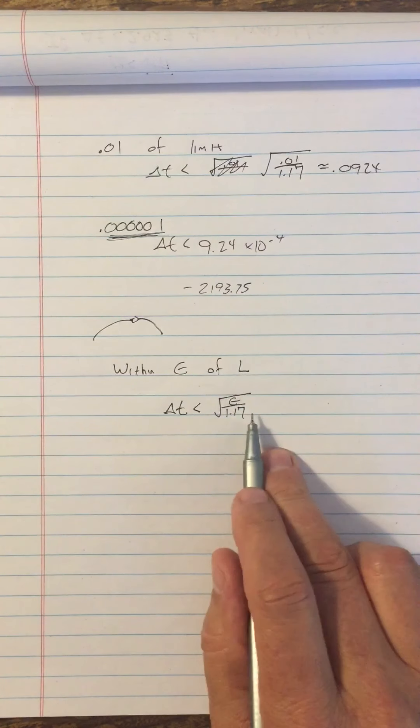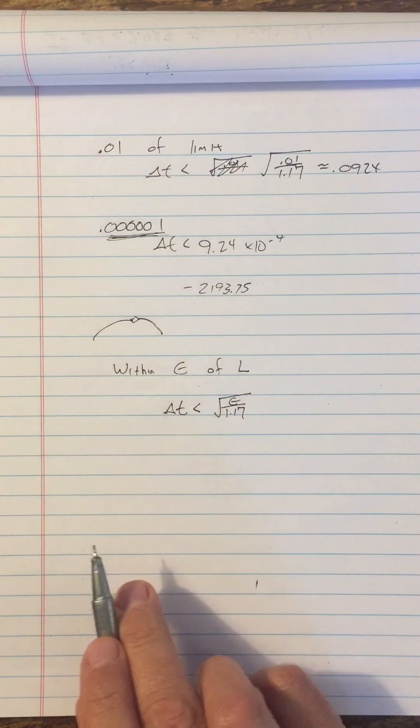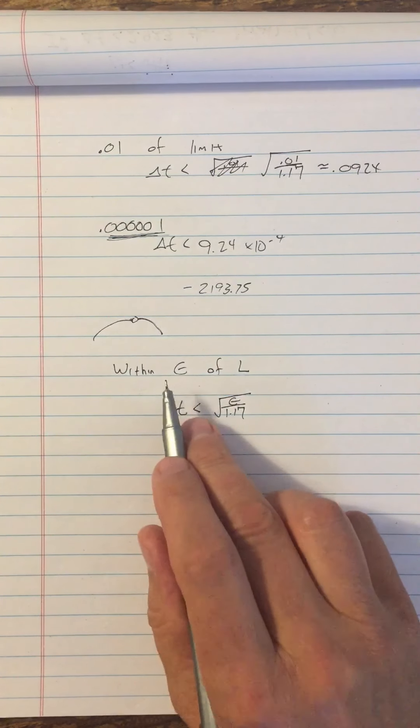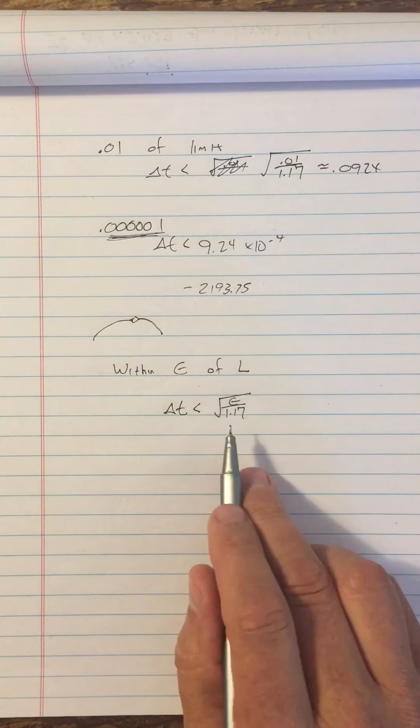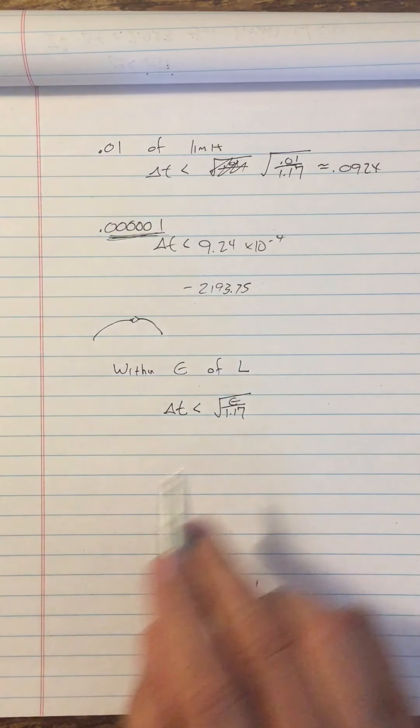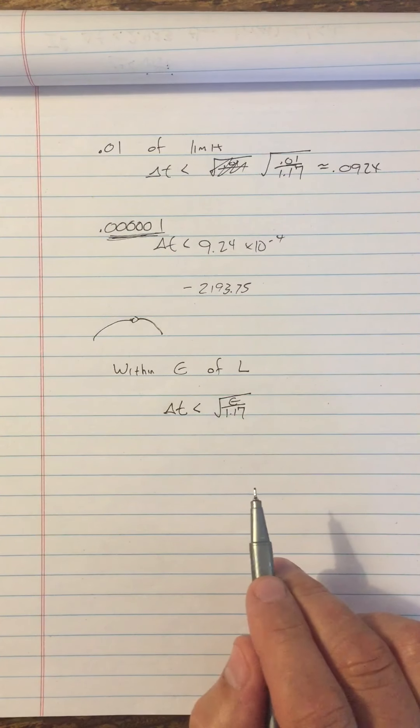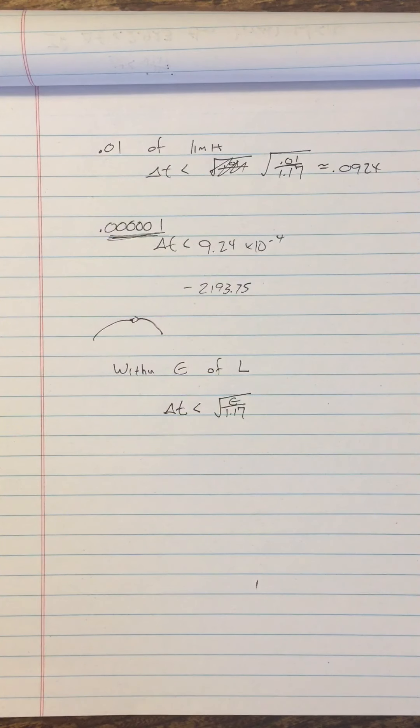This number can get as small as you want. Any proximity you want epsilon of L, you could get that close by using delta T equals square root of epsilon over 1.17. So we're going to put that into a definition next.